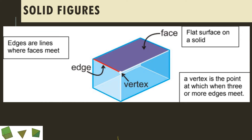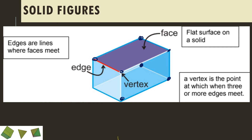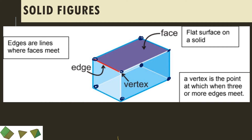So edges are the lines where the faces meet. Lastly, the vertex — the vertex is the corner where the edges meet. For the cuboid, we have: 1, 2, 3, 4, 5, 6, 7, 8 — so we have 8 vertices. The vertex is the corner of the figure.